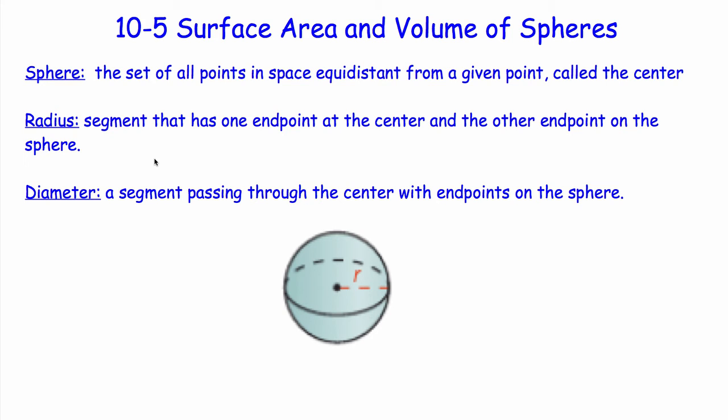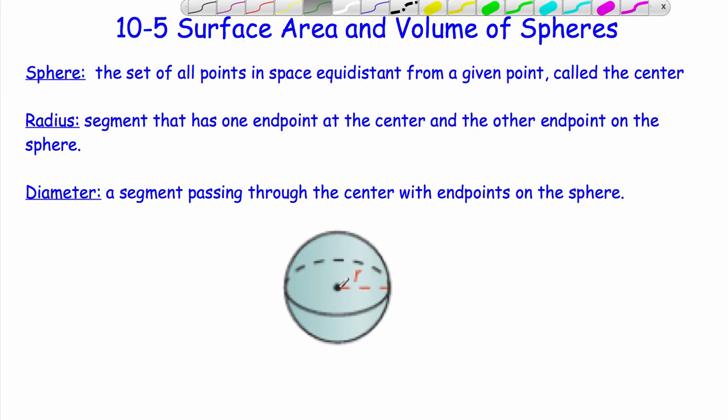A diameter is a segment passing through the center with endpoints on the sphere. If you think about it, we have our radius right here. If I took this the same length and just wrapped it in and sent it around all different directions, it would form this sphere, a ball type figure. All those radii are the same length and the figure that is made up is called a sphere.